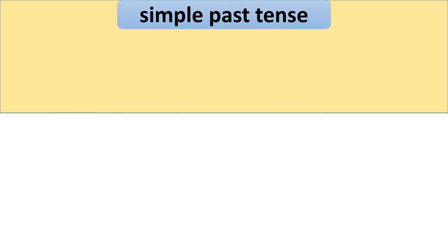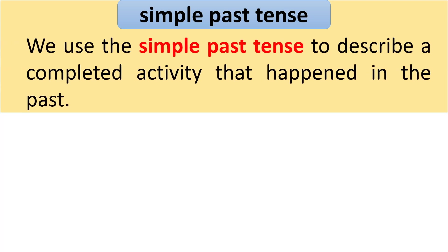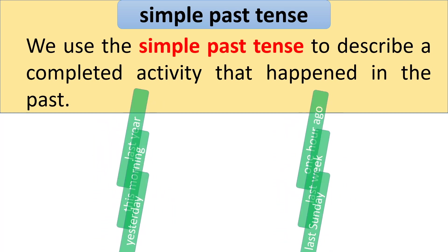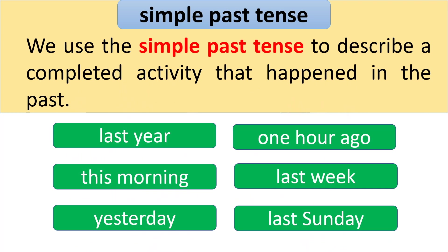Simple Past Tense. We use the simple past tense to describe a completed activity that happened in the past. When you find these time words in a sentence — for example, last year, this morning, yesterday, one hour ago, last week, and last Sunday — we need to use the simple past tense.